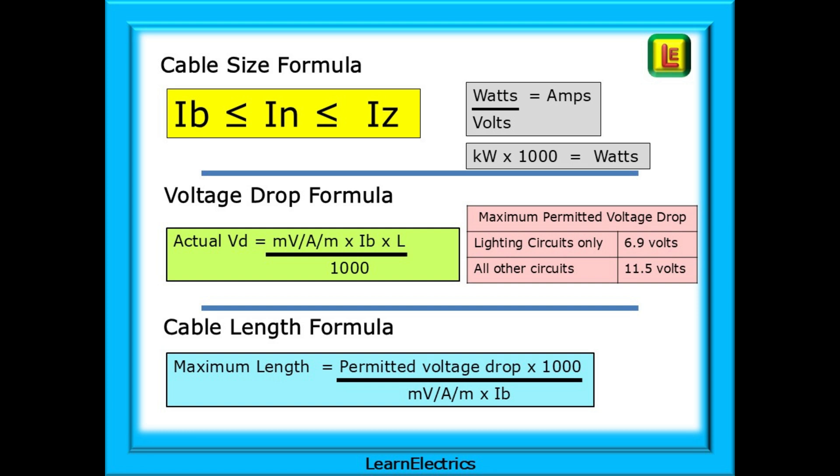For example, a 3kW immersion heater on a 230V feed. Or a 240V lighting circuit with 6 100W BC lamps.